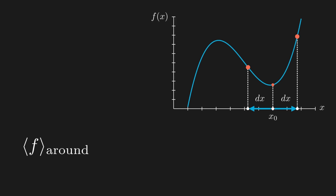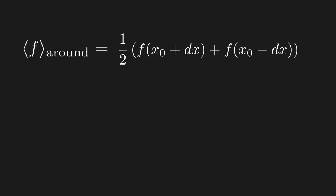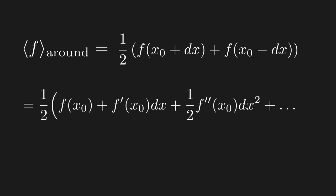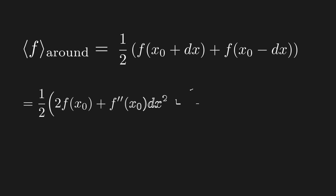Let's calculate the value of this average term. The average of the two values around x₀ is calculated by adding then dividing by two. Since dx is supposed to be pretty small, we Taylor expand both quantities around x₀. The Taylor series of the point to the right of x₀ and the point to the left can each be written out. When we add the two, the terms with an odd power of dx cancel out, leaving only the terms with an even power of dx.